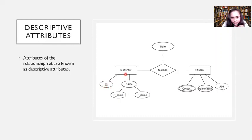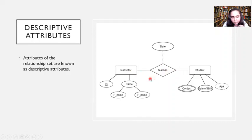Here I have an instructor and a student entity set. In between there is a relationship called 'instructor teaches student'. Always remember: relationships are shown as rhombuses. The attributes shown are ID, name, first name, and last name for instructor; and contact, date of birth, and age for student. There is also a property attached to the teachers relationship, which is date — the date on which the instructor started teaching a particular student.